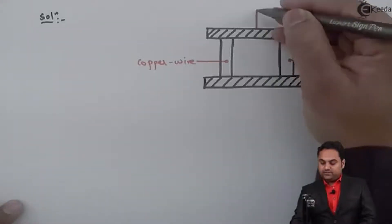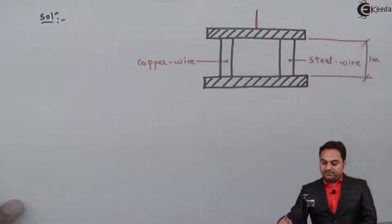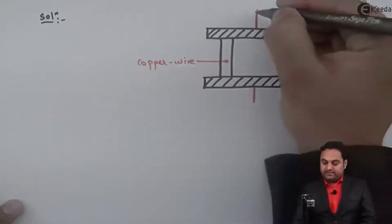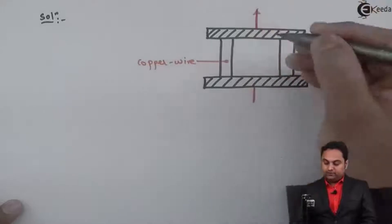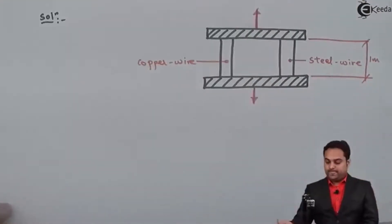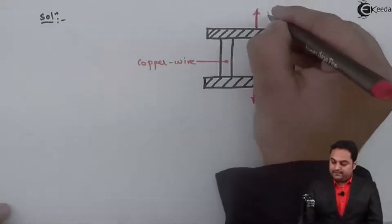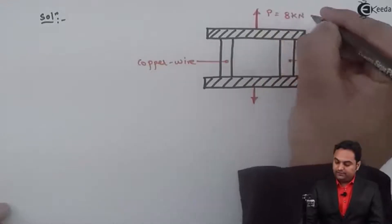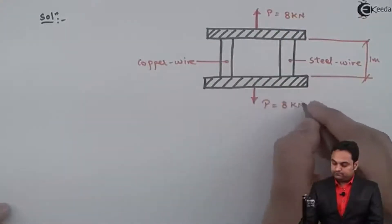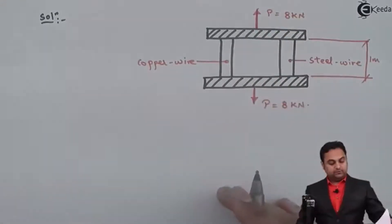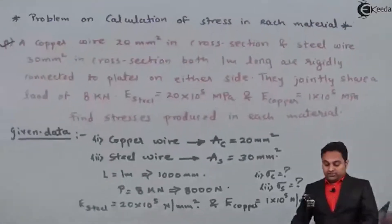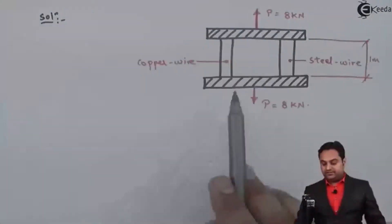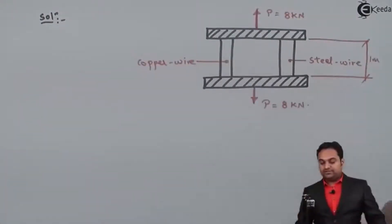I am assuming it is a tensile kind of load which is applied, with a value of 8 kilonewton. The question is to find the stresses produced in each material — stress in copper and stress in steel.